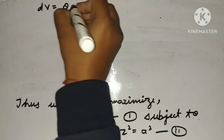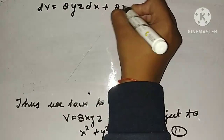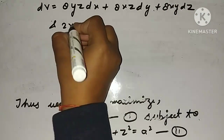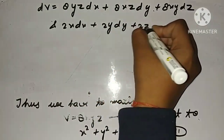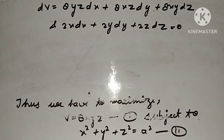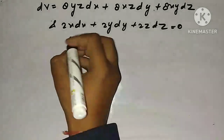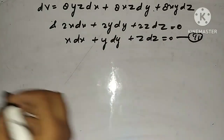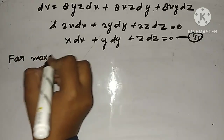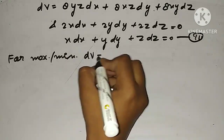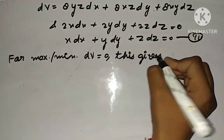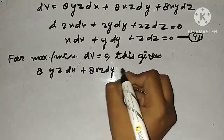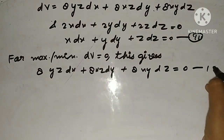dV = 8yz·dx + 8xz·dy + 8xy·dz, and differentiating the constraint gives 2x·dx + 2y·dy + 2z·dz = 0, which simplifies to x·dx + y·dy + z·dz = 0 — equation third. For maxima, dV = 0 gives 8yz·dx + 8xz·dy + 8xy·dz = 0 — equation fourth.